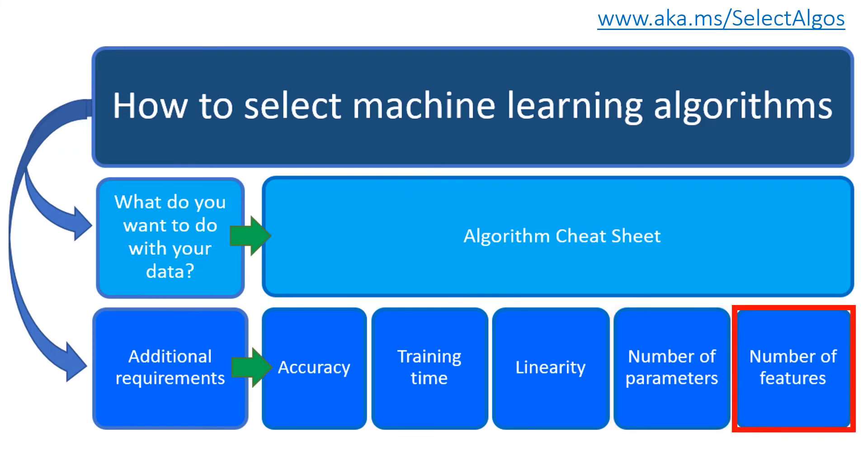Finally, we have the number of features. So a machine learning feature is really a variable of the phenomenon that you're trying to analyze and study. For certain types of data, the number of features can be very large compared to the number of data points.